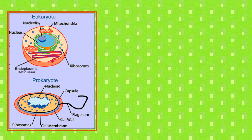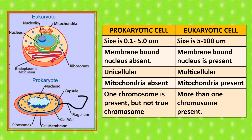Let us do a little revision on what is the prokaryotic and what is the eukaryotic cell. From this table, you can see that the prokaryotic cell is much smaller than the eukaryotic one. The membrane-bound nucleus is absent in a prokaryotic cell — there is just a lump of nuclear material. Whereas in the eukaryotic cell, a membrane-bound nucleus is present and all cell organelles are very clearly defined.